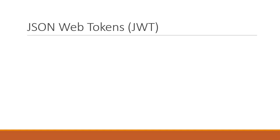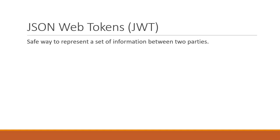Now that we know we are going to use tokens for authentication, let's understand what exactly is a token and how we will be generating and verifying tokens in our application. The token we will be using contains JSON data and is called a JSON Web Token. A JSON Web Token, or JWT as it is pronounced, is a JSON object that is defined as a safe way to represent a set of information between two parties.